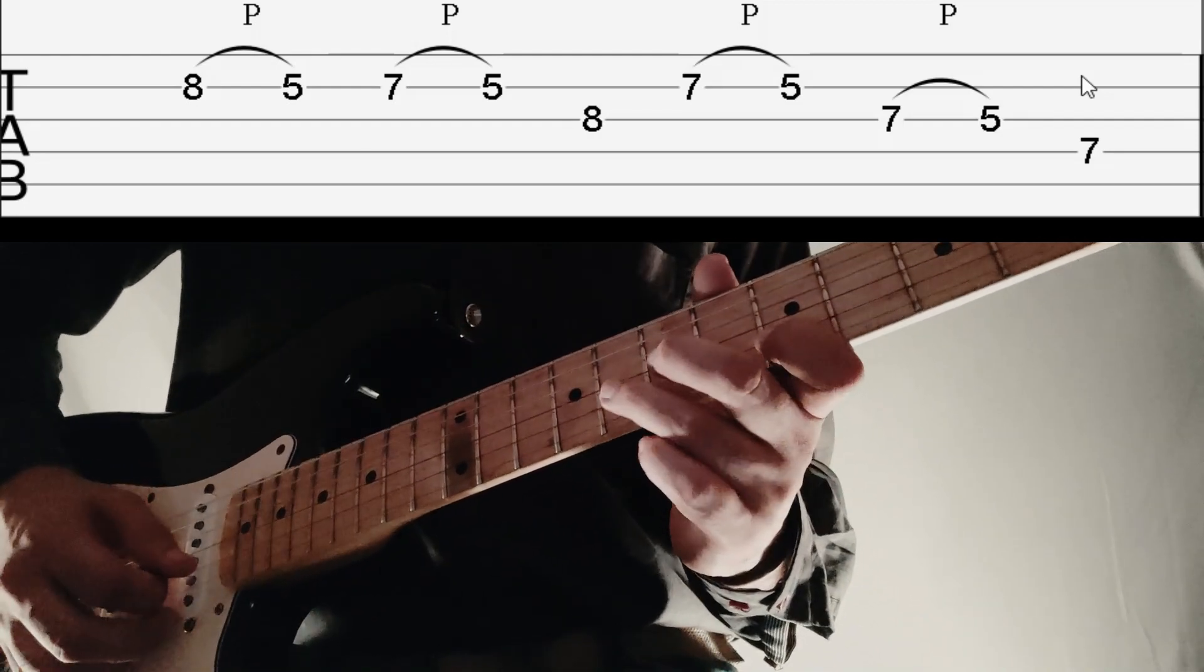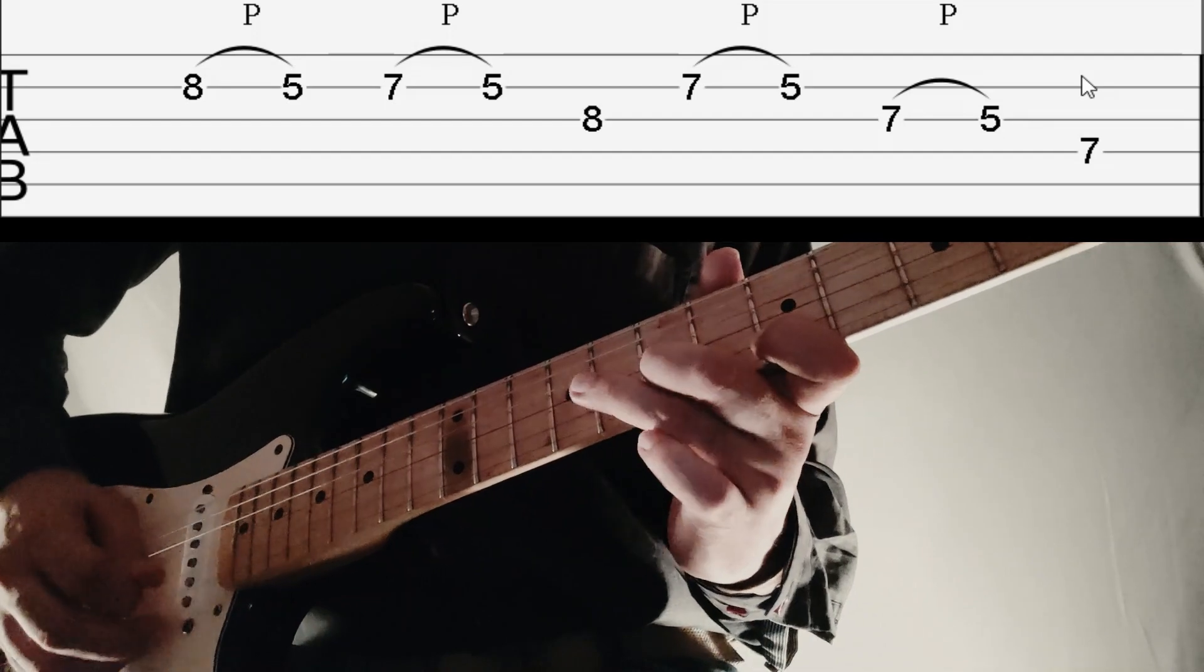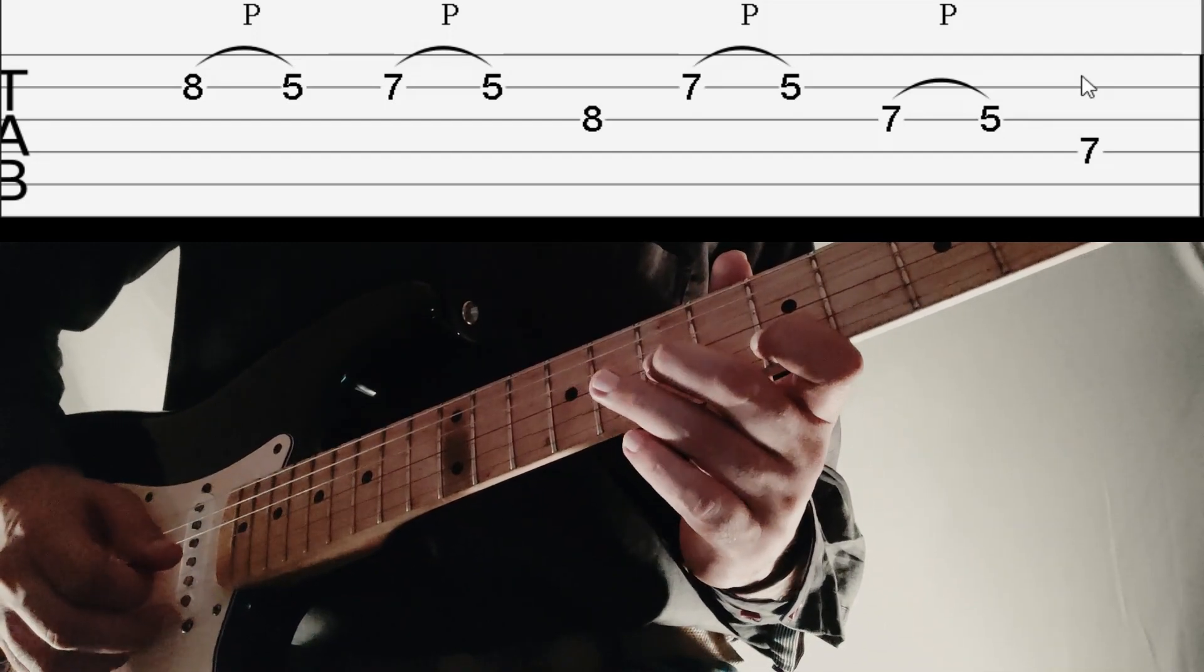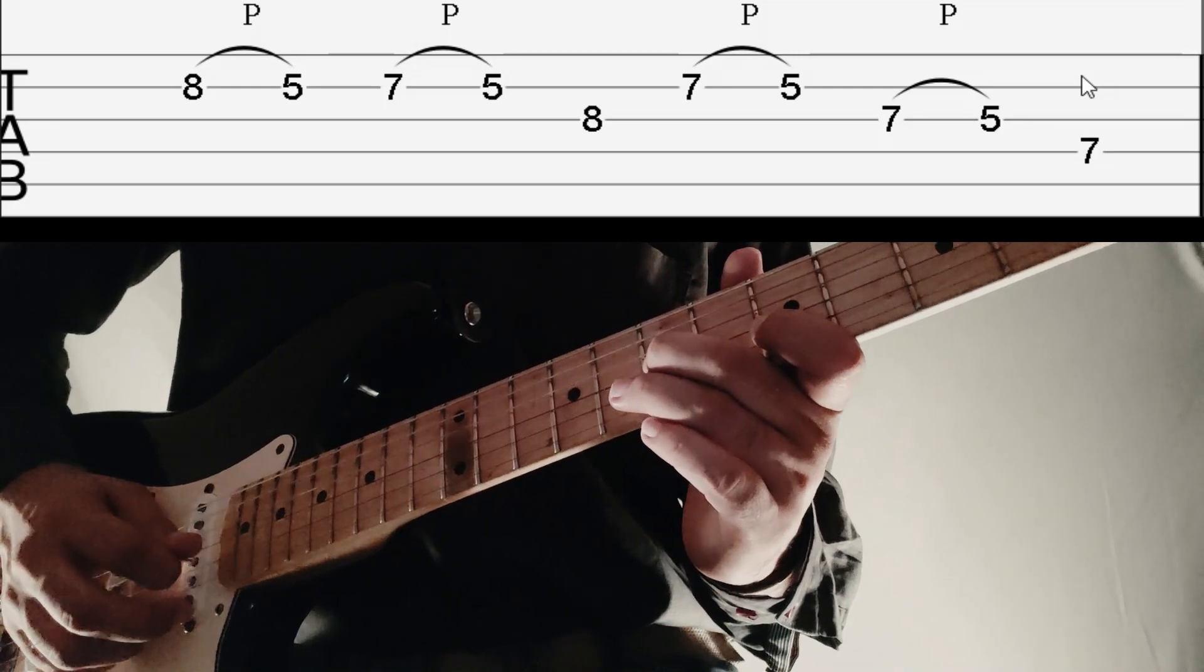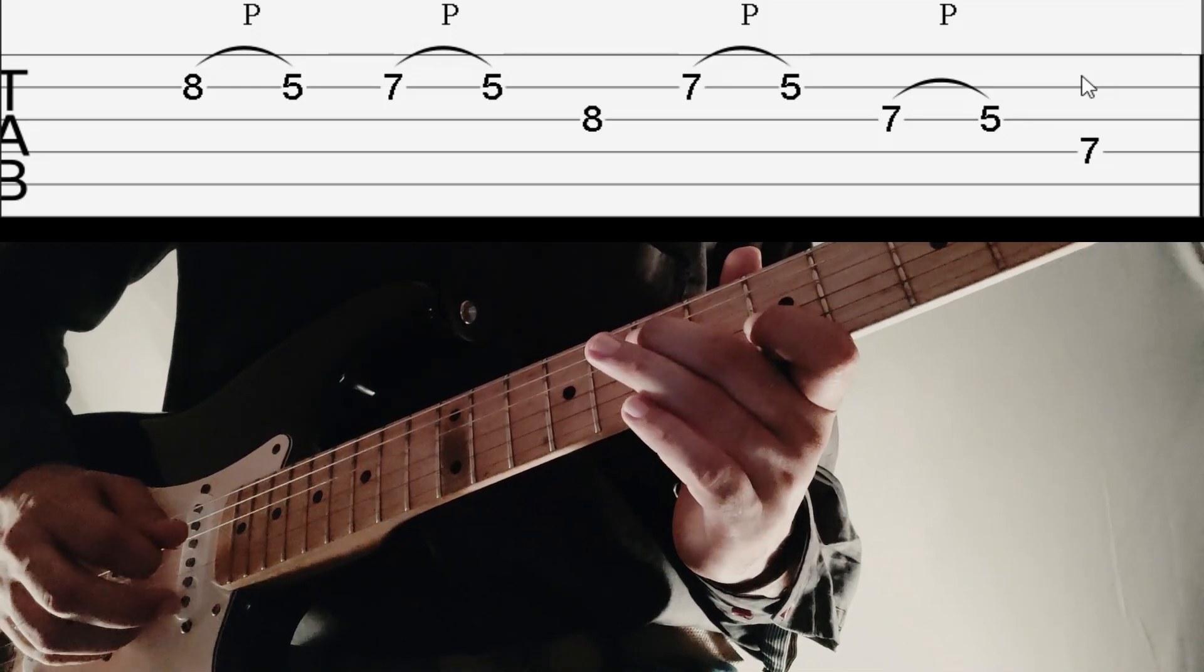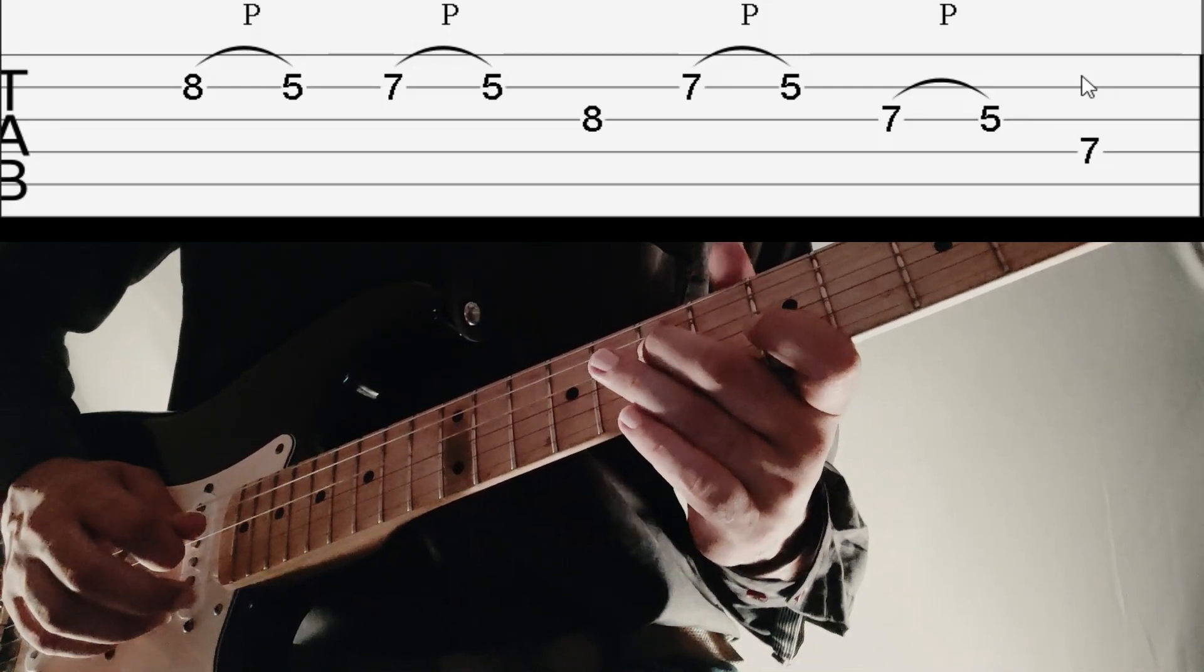So so far we have, which is then followed by 7 to 5 pull off on 3rd string and hit 7th fret on 4th string.